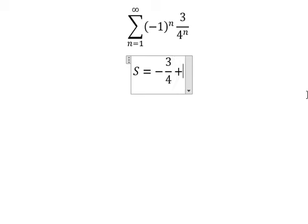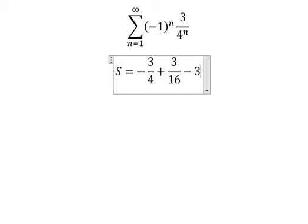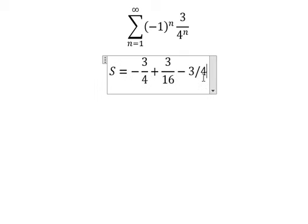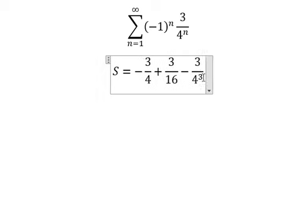If I put n=2, that is three over 16, which is positive. If I put n equals to 3, that is negative three over four to the power of three, and so on.